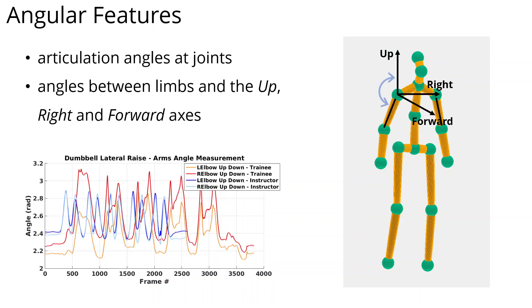Now, we show the angle between the upper arms and the up-axis in a dumbbell lateral raise exercise. The angles of the two arms of the instructor have similar magnitudes, while the trainee's angles are more chaotic.